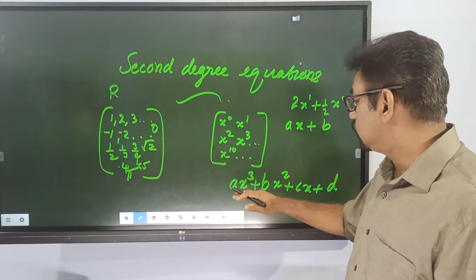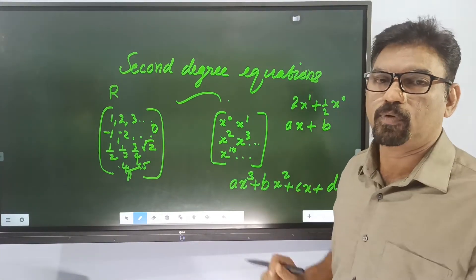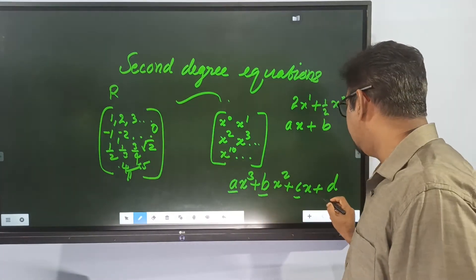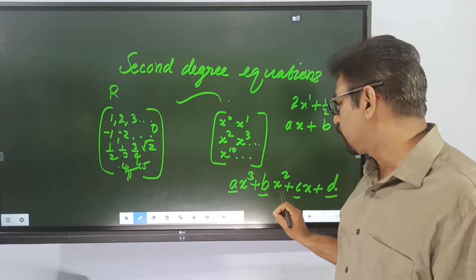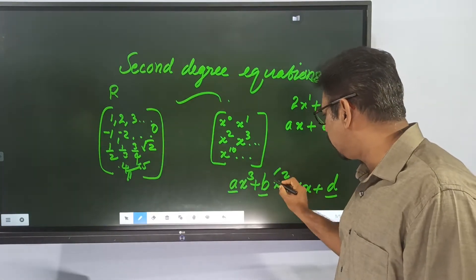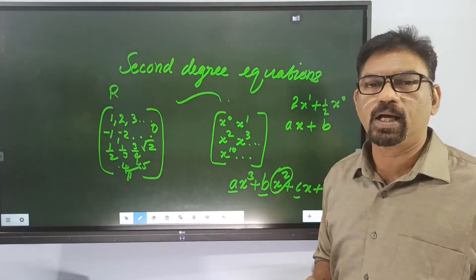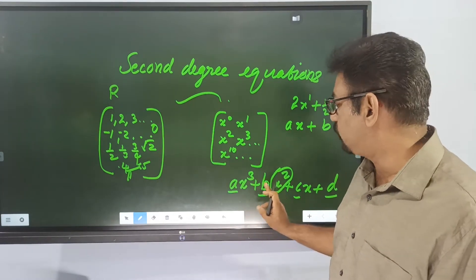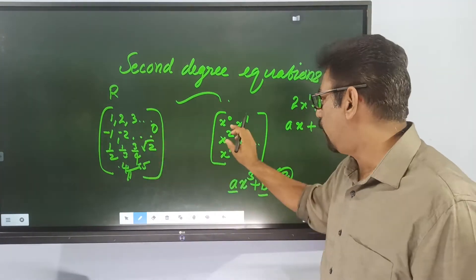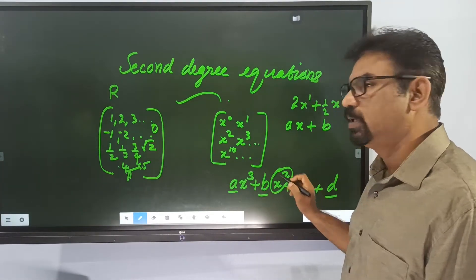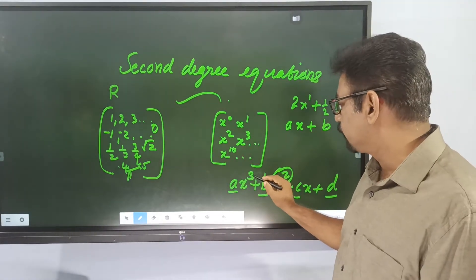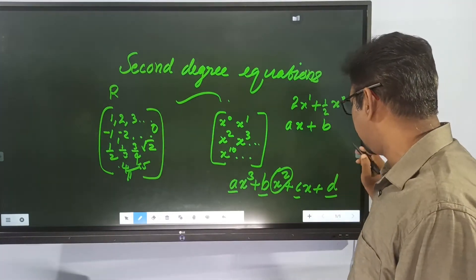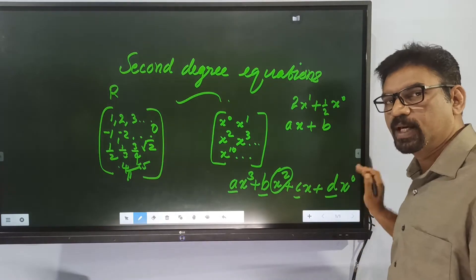This is the general expression for a third degree polynomial. The coefficients are a, b, c, and d. There is one indeterminate part — the variable part — which is the coefficient. So we follow x raised to 3, x raised to 2, x raised to 1, and x raised to 0. These are the coefficients.